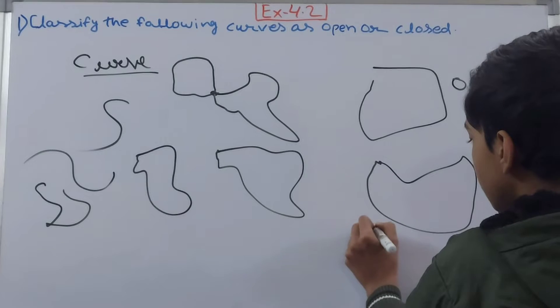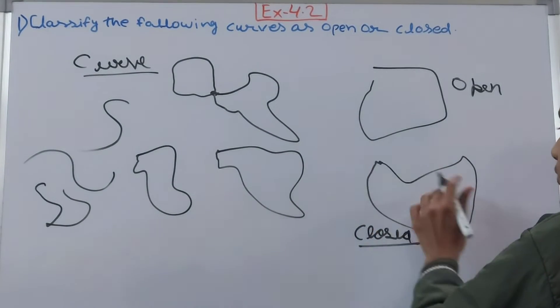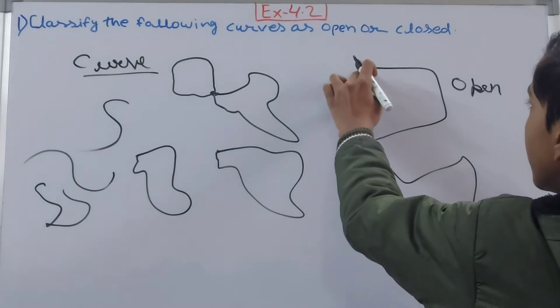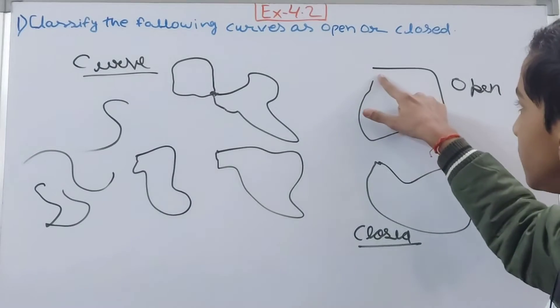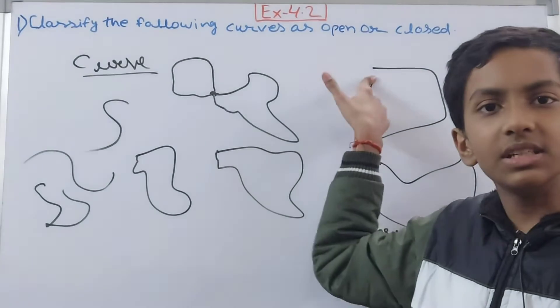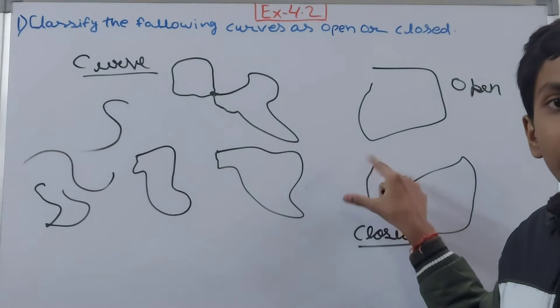So this is an open curve, and this will be called a closed curve. Because here, this whole boundary is closed, but here it is open from here. So you know that it is not complete and it is not coming back at its initial point.